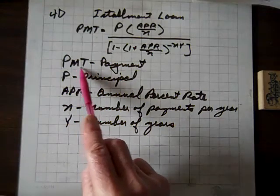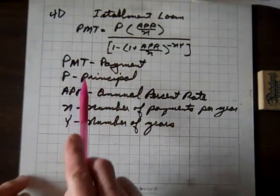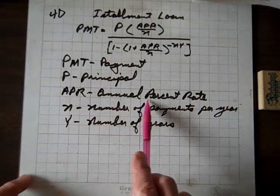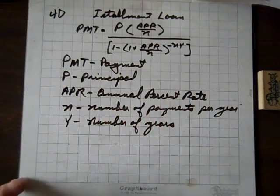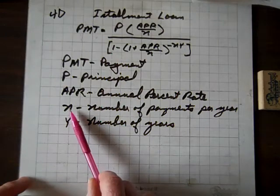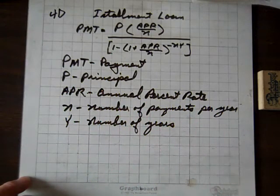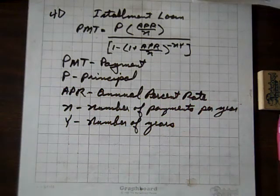So as I said, PMT represents payment, P for principal, APR for annual percentage rate the interest rate, N for number of payments per year, and Y for the number of years. So we'll need that formula for several of these problems.